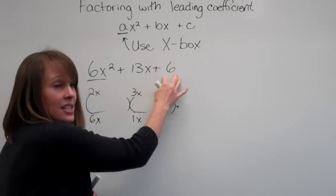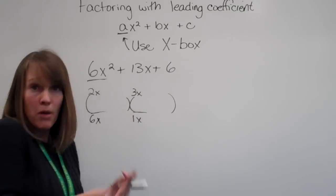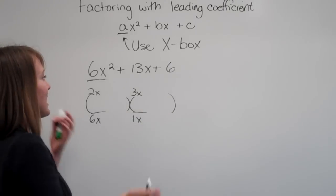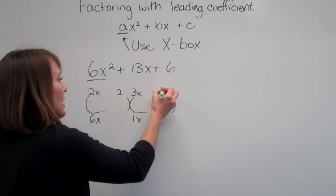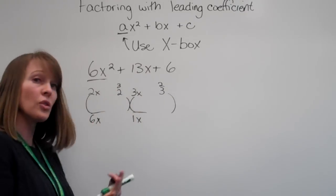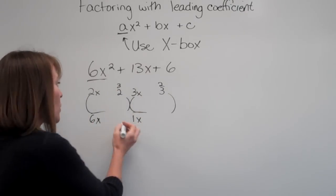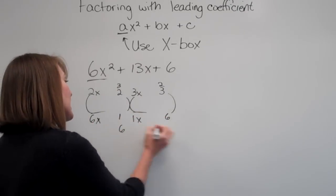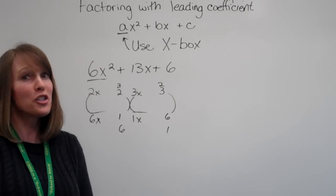We also know that this last term are the two factors that multiply here. So let me see. We could do 2 times 3, but because of these numbers here, 3 times 2 will also give us another answer. Or we could do 1 times 6 or 6 times 1. Well, to do a guess and check,